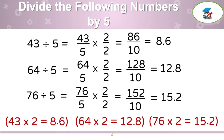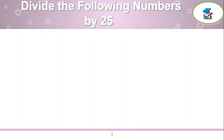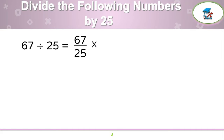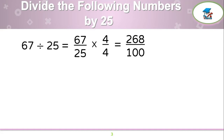This is a much easier and faster trick. Now let us divide the following numbers by 25. First example: 67 by 25. Write 67 over 25, which should be multiplied by 4 over 4. 67 times 4 is 268, and 25 times 4 is 100, and your answer is 2.68.